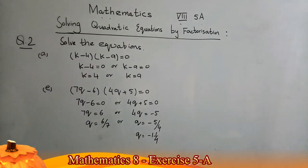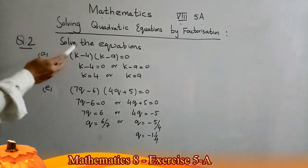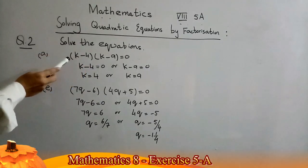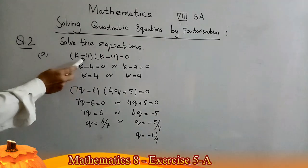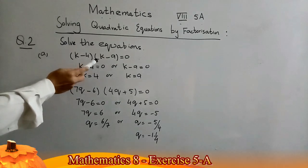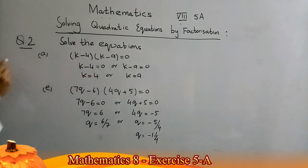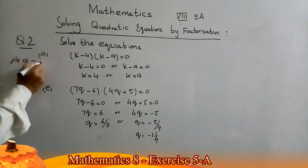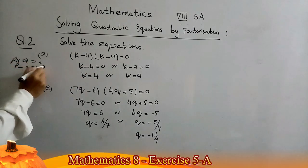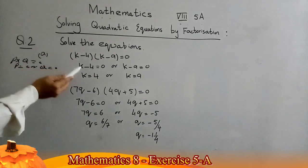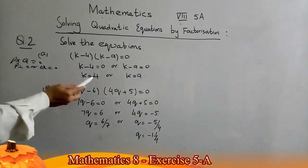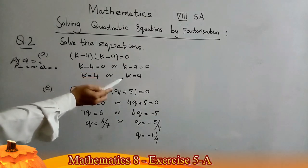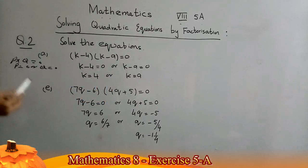The remaining parts of Question 1 will be your homework. Now, Question 2, Part 1: solve the equation — find the value of k. The equation is (k − 4)(k − 9) = 0. Using the principle, either k − 4 = 0 or k − 9 = 0, so k = 4 or k = 9.